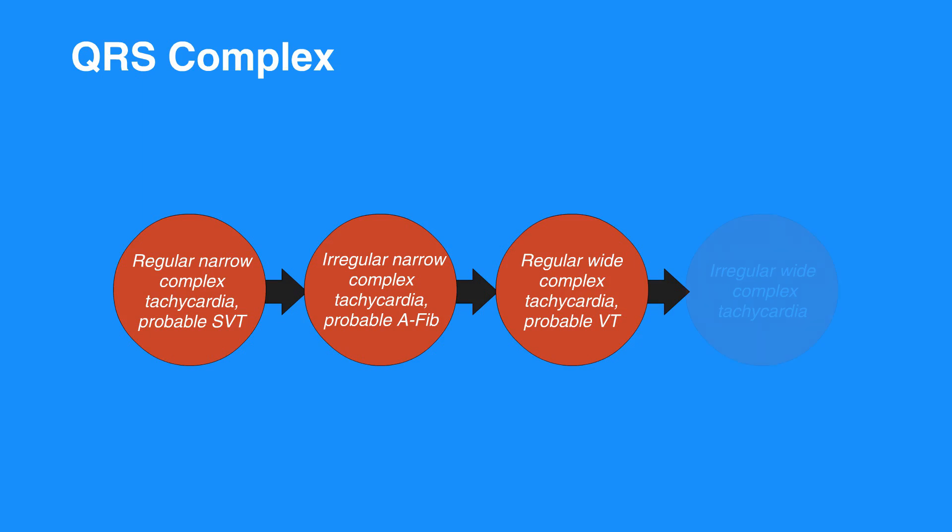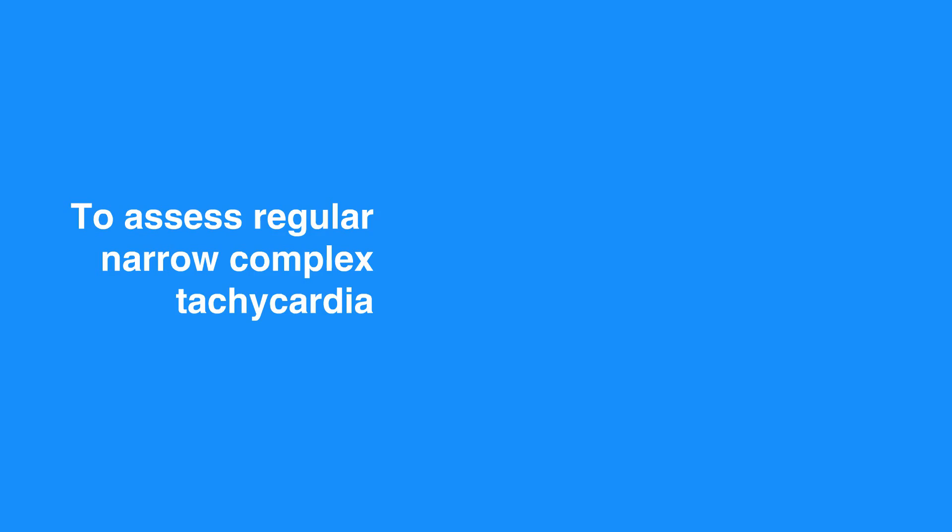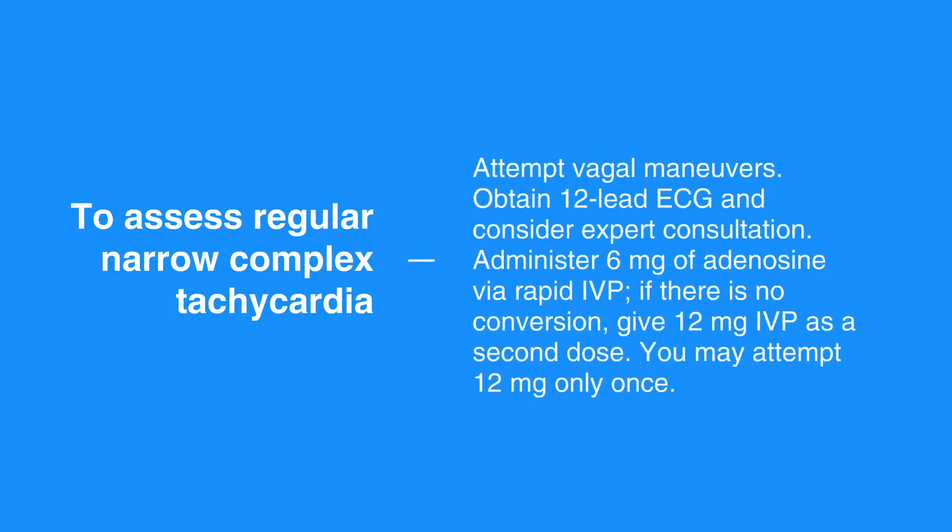To assess regular narrow complex tachycardia, or probable SVT, attempt vagal maneuvers. Obtain a 12-lead ECG and consider expert consultation. Administer 6 mg of adenosine via rapid IVP. If there's no conversion, give 12 mg IVP as a second dose. You may attempt 12 mg only once.